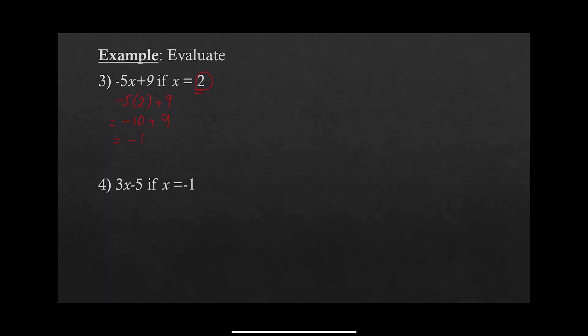Fourth example: 3x minus 5, if x equals negative 1. Replace x with a bracket: 3 times bracket, minus 5. Inside the bracket write negative 1. This is one of the reasons to use brackets — without them you might read it as 3 minus 1, but it is 3 times negative 1. 3 times negative 1 is negative 3, minus 5: negative 3 minus 5 equals negative 8.